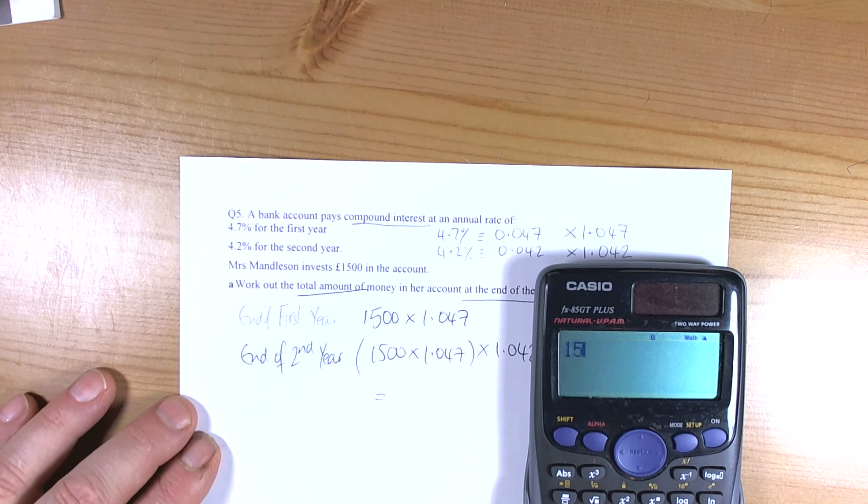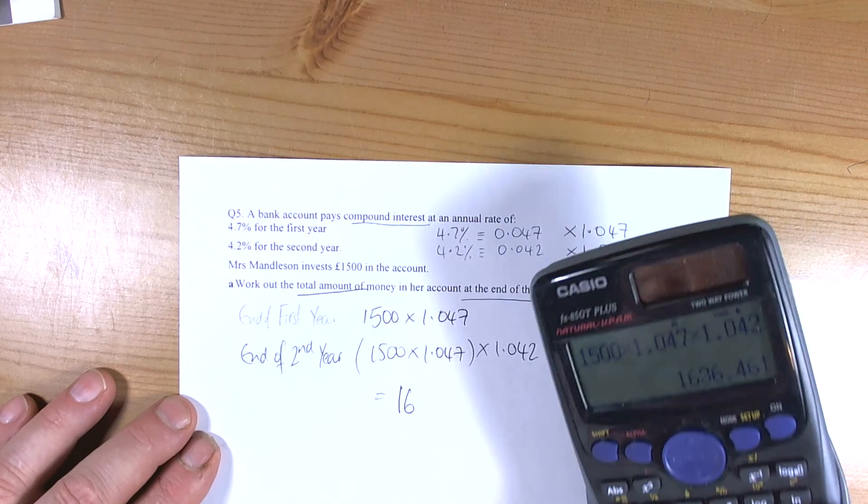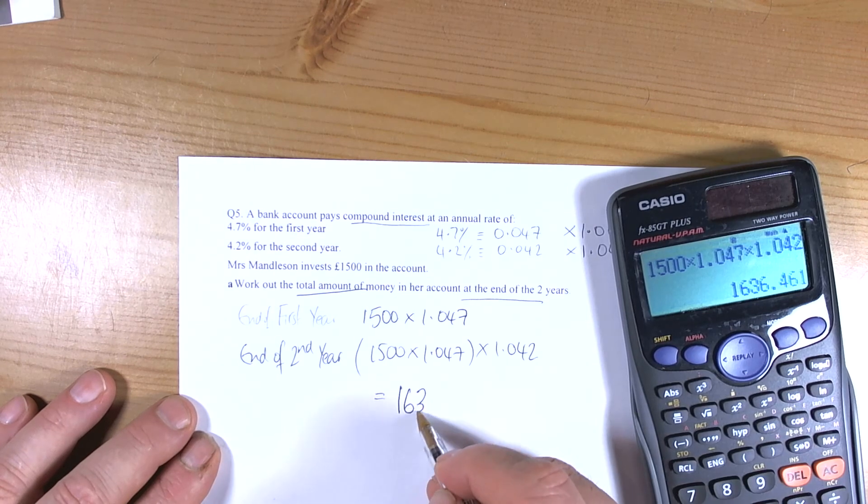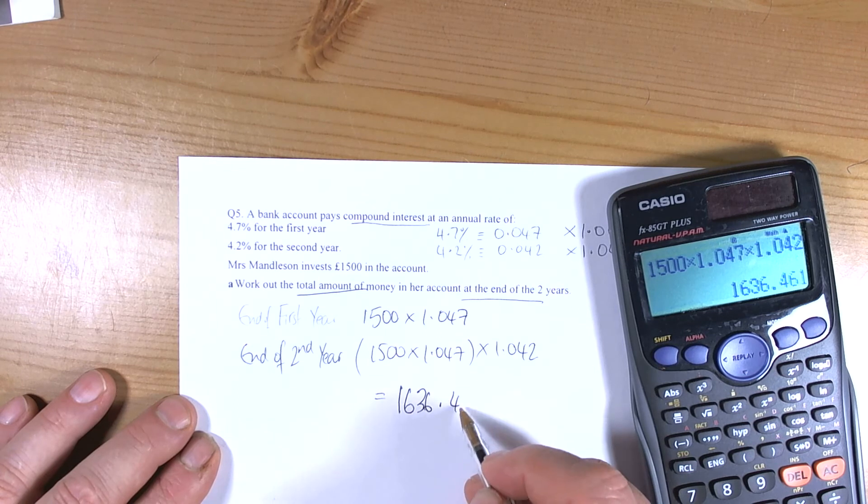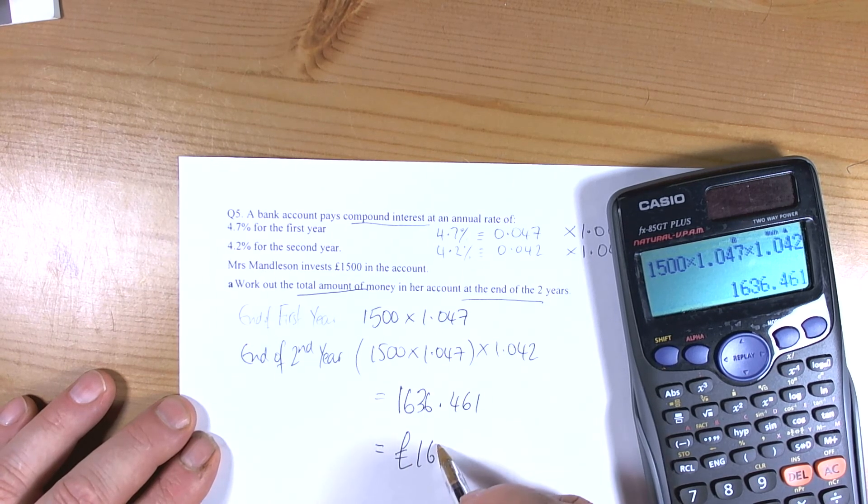So we've got 1,500 times 1.047 times 1.047 equals. So we've got an answer of 1636.461.